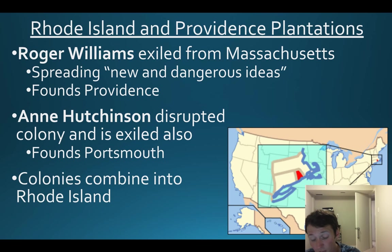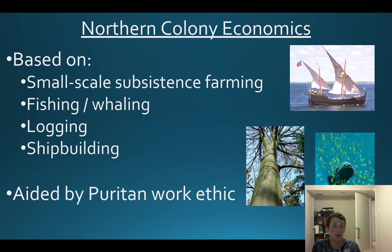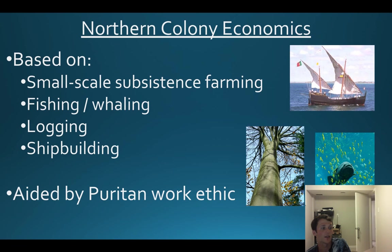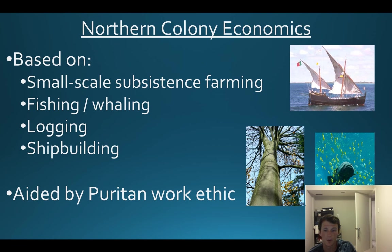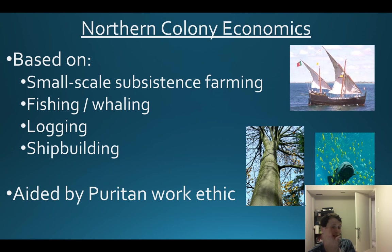These two colonies eventually combine to form Rhode Island and Providence Plantations - the official full name of the state. Their economy in the north is based off small-scale farming since the growing season isn't very long. Access to the sea means fishing and whaling - whale oil for lights. They also do logging for ship masts and shipbuilding, aided by the Puritan work ethic.